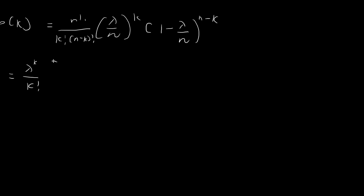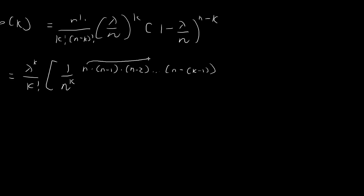We also have a 1 over n to the power of k. For the factorial terms, we have n times n minus 1 times n minus 2, all the way to n minus k minus 1 — so we have k terms from the n factorial. All of the remaining terms will be offset by the n minus k factorial in the denominator, so they all cancel out, and we're left with only these k terms in the numerator.